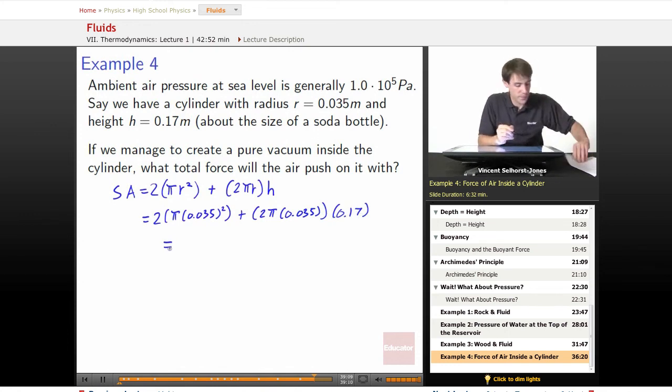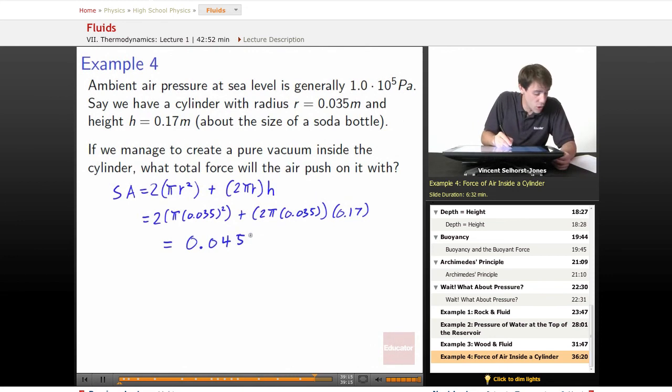We toss that all in together, put it into a calculator, and we get that the total surface area our cylinder has exposed to the air is 0.0451 m².